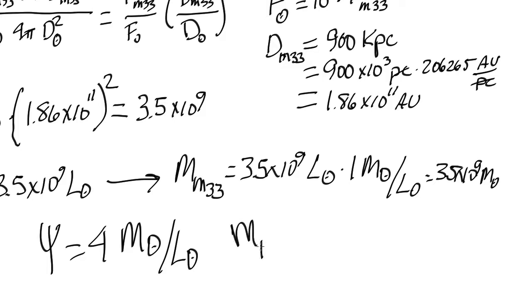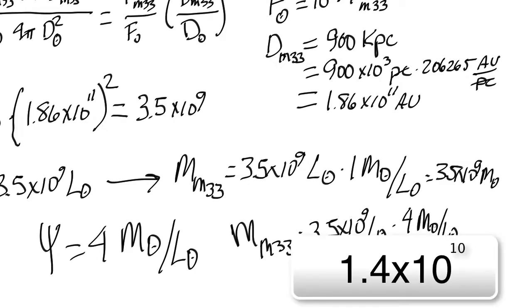Mass of M33 will be equal to 3.5 times 10 to the 9 L solar times 4 M solar per L solar, giving us our final number of 4 times 3.5 times 10 to the 9. So that is how massive we think M33 is from how many stars it has.